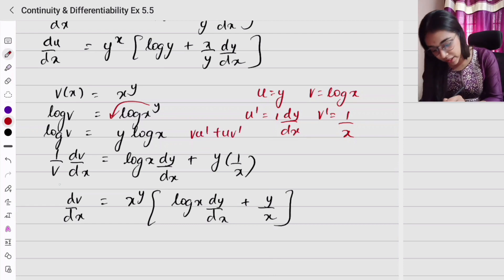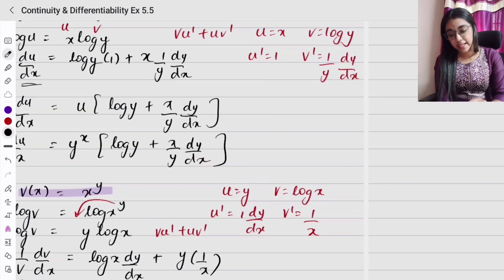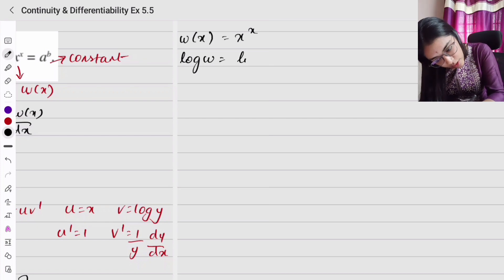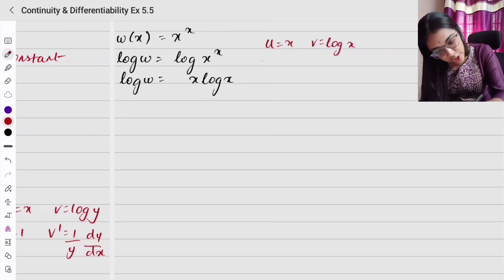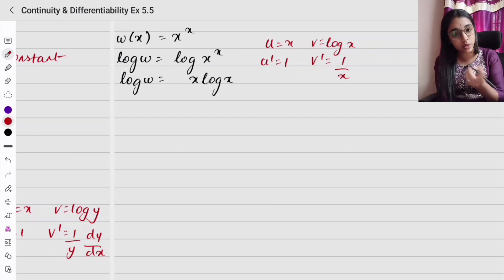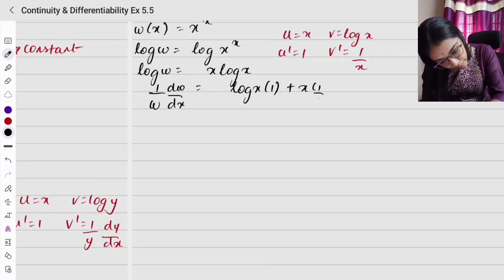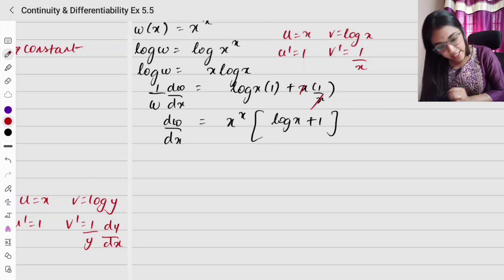Now for dw/dx, where w = x^x. Taking log on both sides: log w = x · log x. Here u = x, v = log x, so u' = 1 and v' = 1/x. Differentiating: (1/w)(dw/dx) = log x · 1 + x · (1/x) = log x + 1. Therefore dw/dx = x^x · (log x + 1), since x and x cancel.